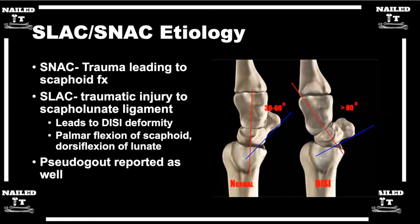Here on these pictures, what you see is already when it's kind of advanced, and you have the scaphoid-lunate angle, which normally is between 30 and 60 degrees. They generally say anything greater than 70 shows there's some sort of instability.